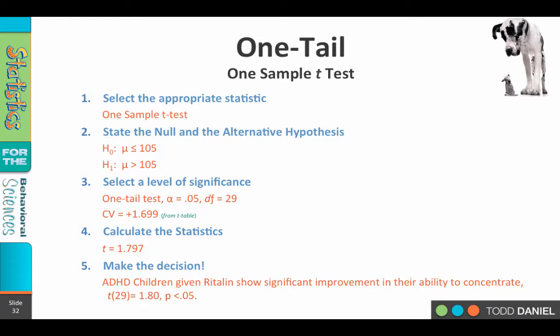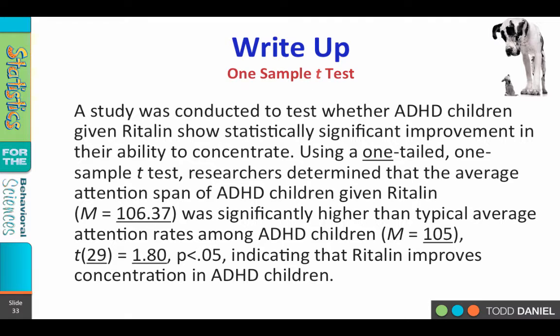Here is the APA write-up: A study was conducted to test whether ADHD children given Ritalin show statistically significant improvement in their ability to concentrate. Using a one-tailed, one-sample t-test, researchers determined that the average attention span of ADHD children given Ritalin (M = 106.37) was significantly higher than the typical average among ADHD children (M = 105), t(29) = 1.80, p < 0.05, indicating that Ritalin improves concentration in ADHD children.